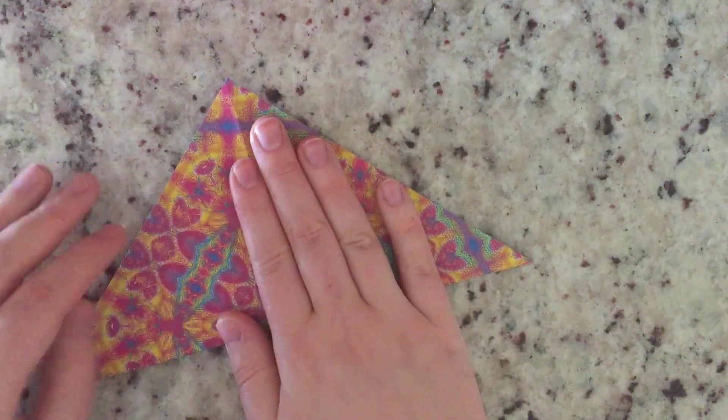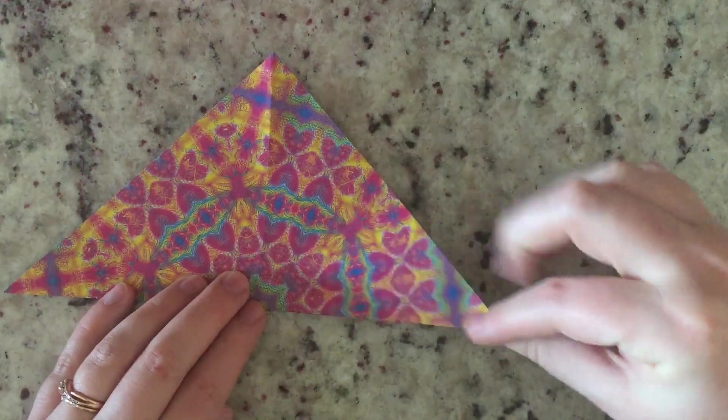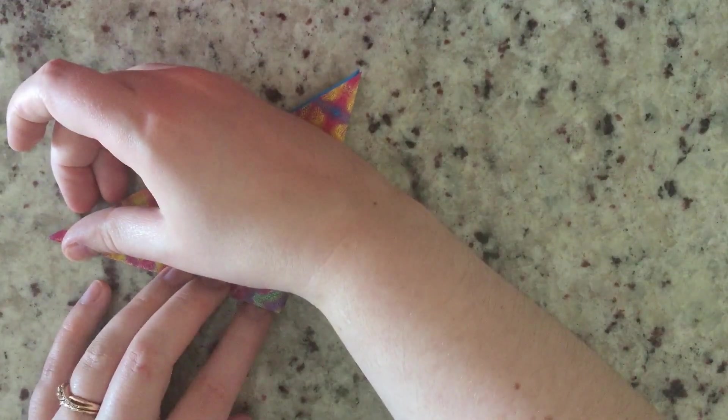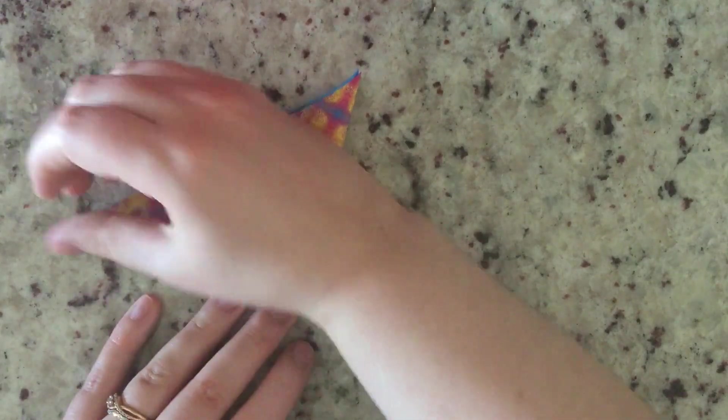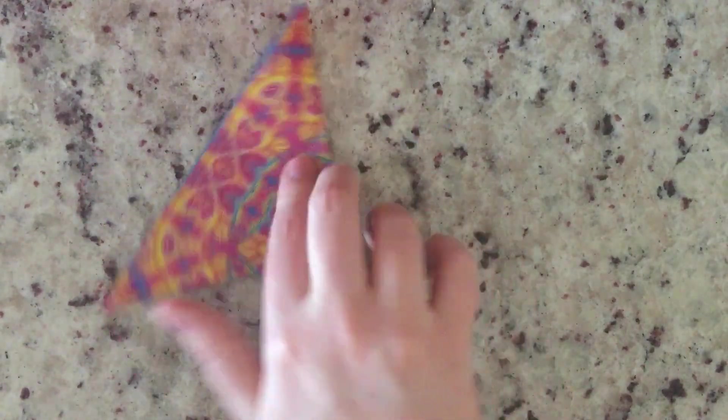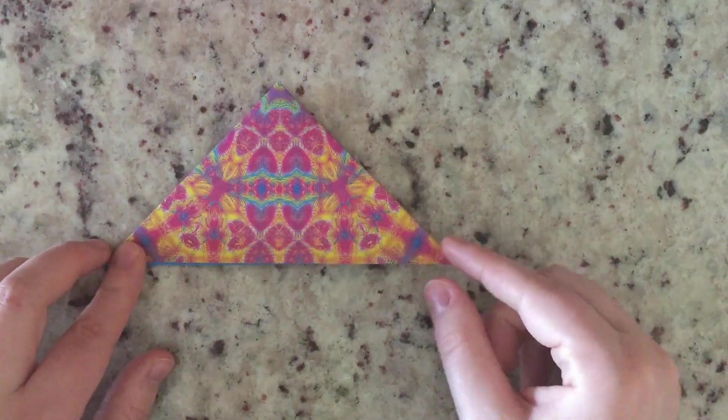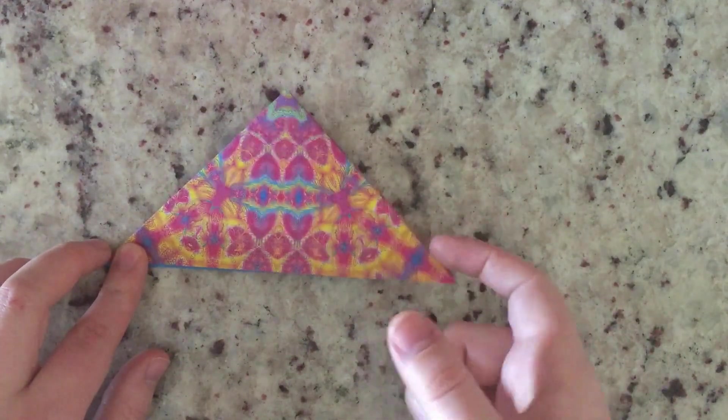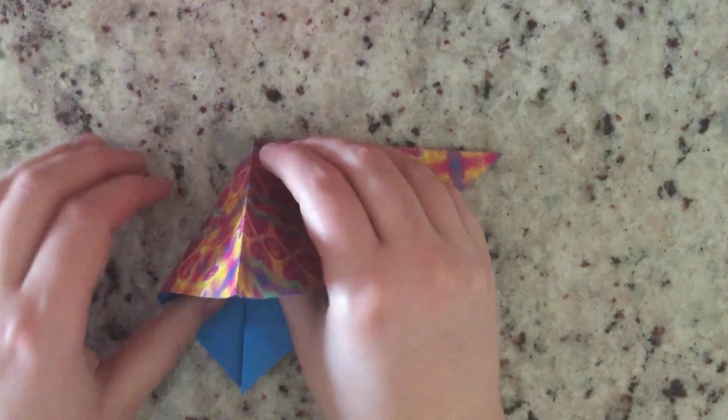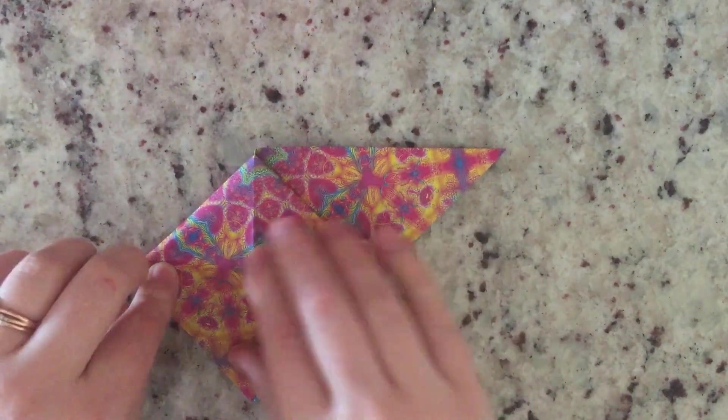Okay, so now we're going to take this triangle that we've made. We're going to fold this corner over to match this corner. Let's flip it around this way. So now we're going to take this folded corner right here and we're going to open it up and squish it down so that we make a nice diamond shape just like this.